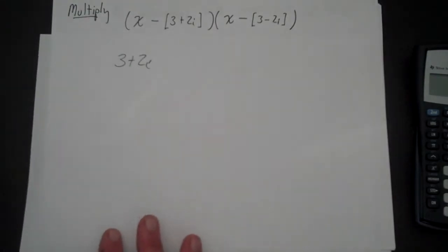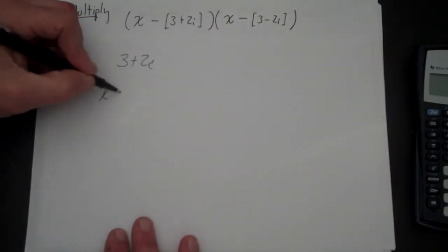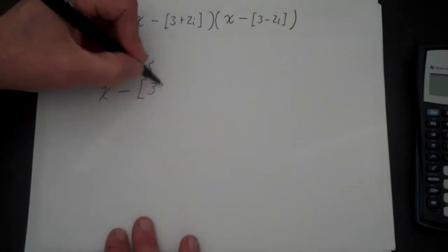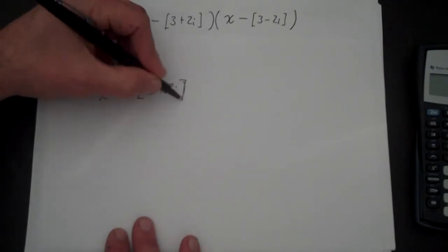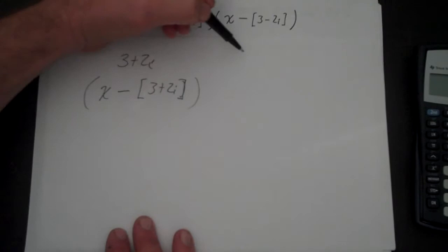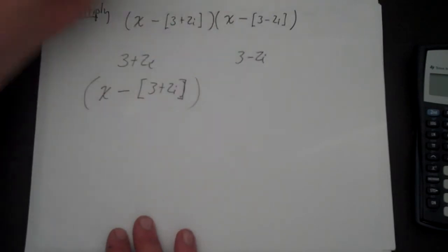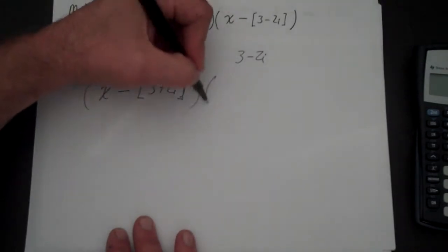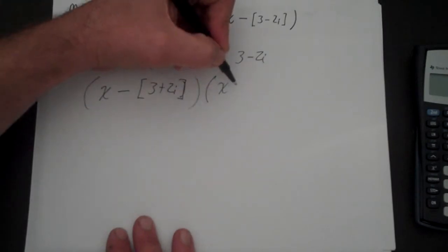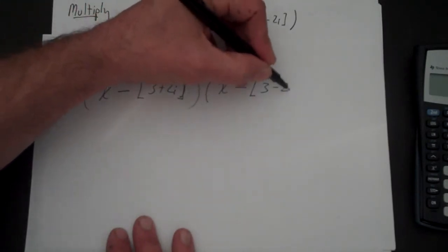If a zero is 3 plus 2i, then a factor is x minus (3 plus 2i). But if 3 plus 2i is a zero, so is 3 minus 2i. So therefore you also have the factor x minus (3 minus 2i).